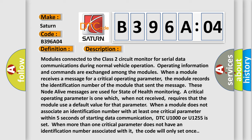Modules connected to the Class 2 circuit monitor for serial data communications during normal vehicle operation. Operating information and commands are exchanged among the modules. When a module receives a message for a critical operating parameter, the module records the identification number of the module that sent the message. These node alive messages are used for state of health monitoring. A critical operating parameter is one which, when not received, requires that the module use a default value for that parameter.